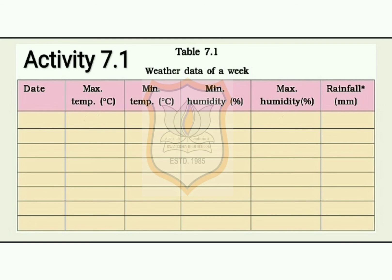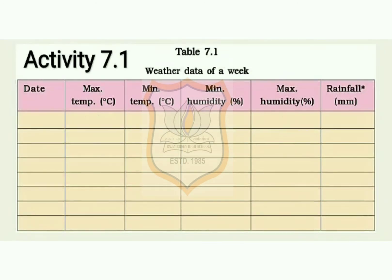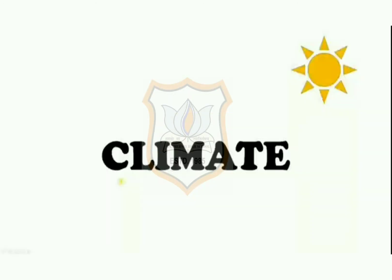Students, you have to do activity 7.1 by yourself. Cut out the weather reports of the last week from any newspaper. If you do not get a newspaper at home, borrow one from your neighbors or a friend. Record the information from the weather reports collected by you in table 7.1. We will study about climate in the next video. Thank you.